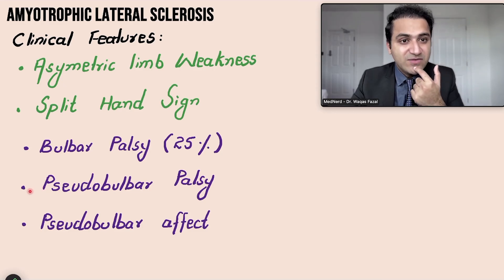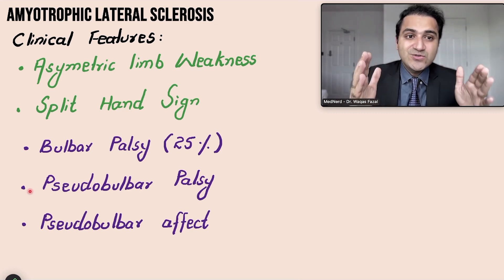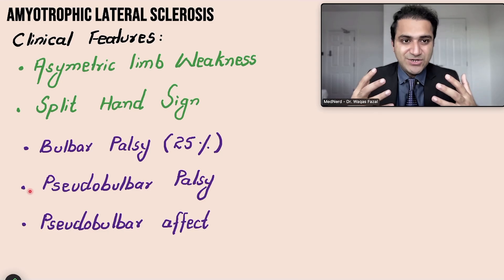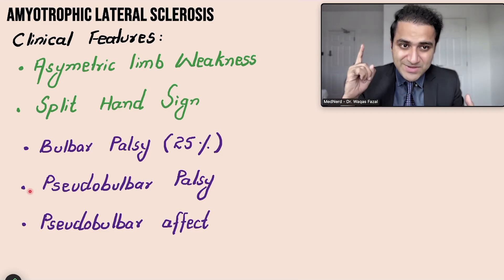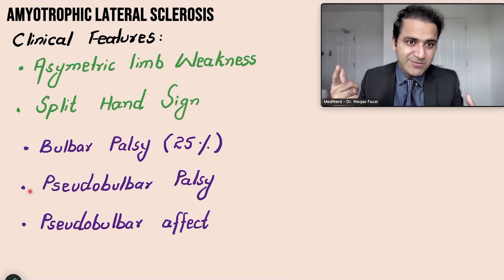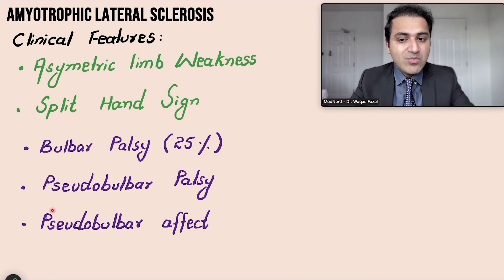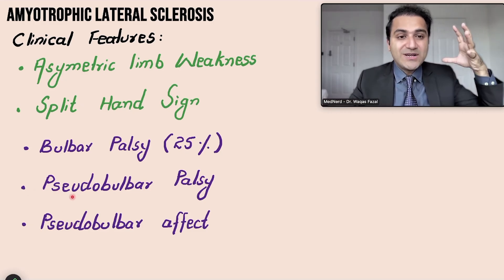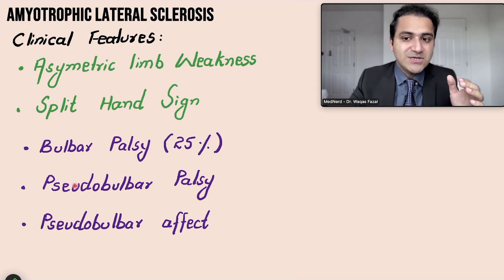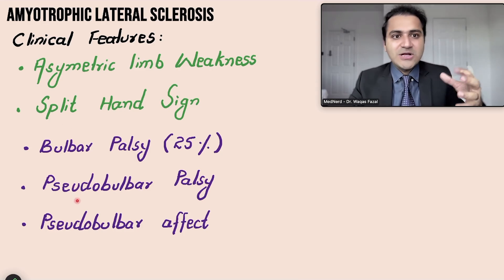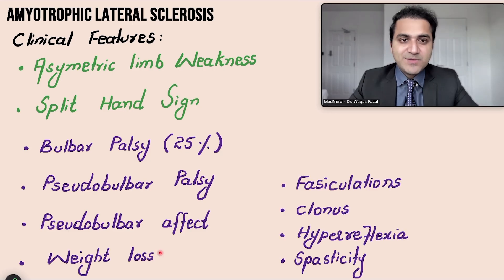In pseudobulbar palsy, the jaw jerk reflex — usually absent in normal people — will be exaggerated, which makes sense for an upper motor neuron lesion. The gag reflex will also be exaggerated, whereas in bulbar palsy the gag reflex and jaw jerk reflex will be absent, as it is a lower motor neuron injury. Pseudobulbar palsy also affects the patient's mood — there is emotional lability with episodes of laughter or crying, called the pseudobulbar effect.